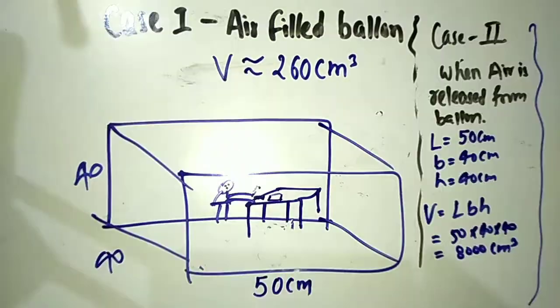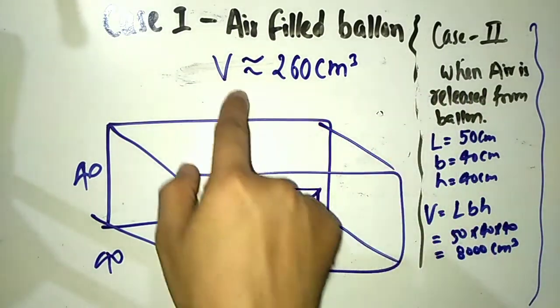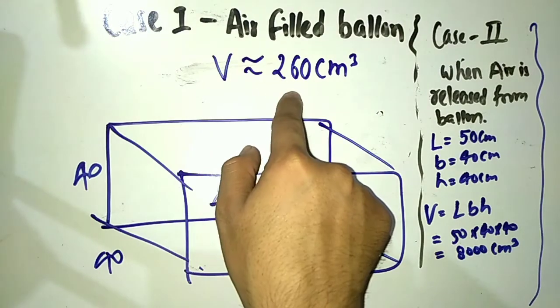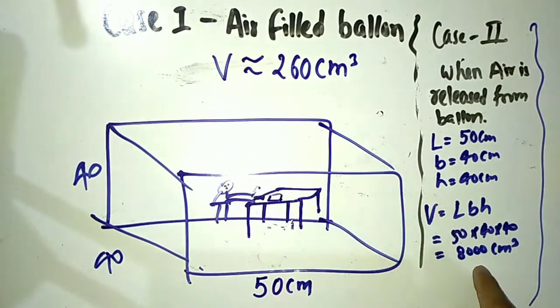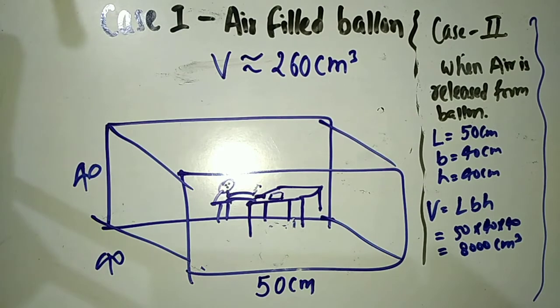Previously when the air was filled in this baby balloon, it was 260 cm³. You saw how the volume of air which was previously 260 cm³ changed into 8000 cm³. Now it's clear what it means by the statement that gases have neither fixed shape nor fixed volume.